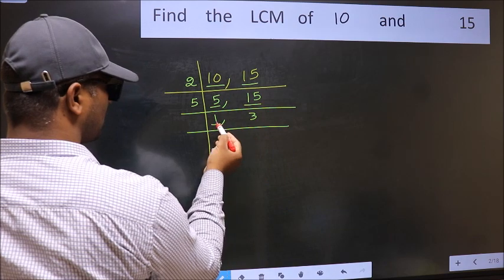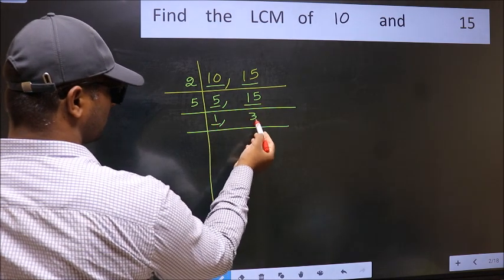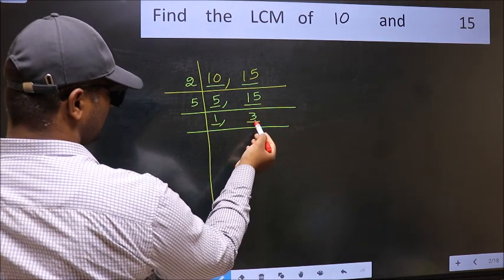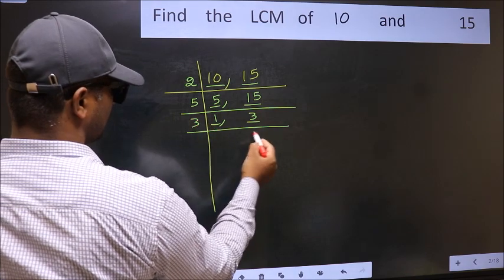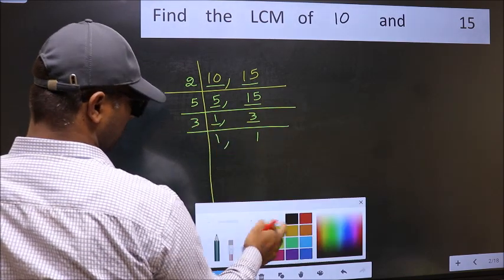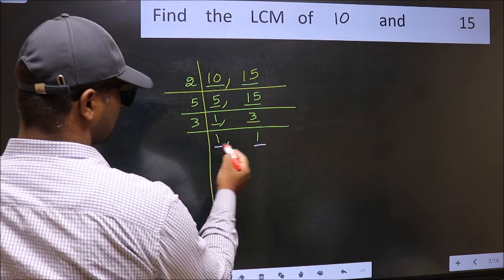Now we got 1 here. So focus on the next number, 3. 3 is a prime number, so 3 times 1 is 3. So we got 1 in both places.